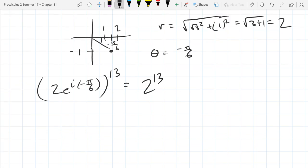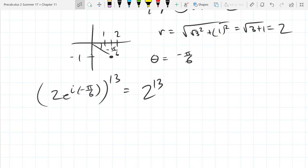2 to the 13th power—that's a really big number, so we're just gonna leave it as 2^13. 2^13 e^(i) times... now we're gonna multiply our angle by 13. So that is our answer.